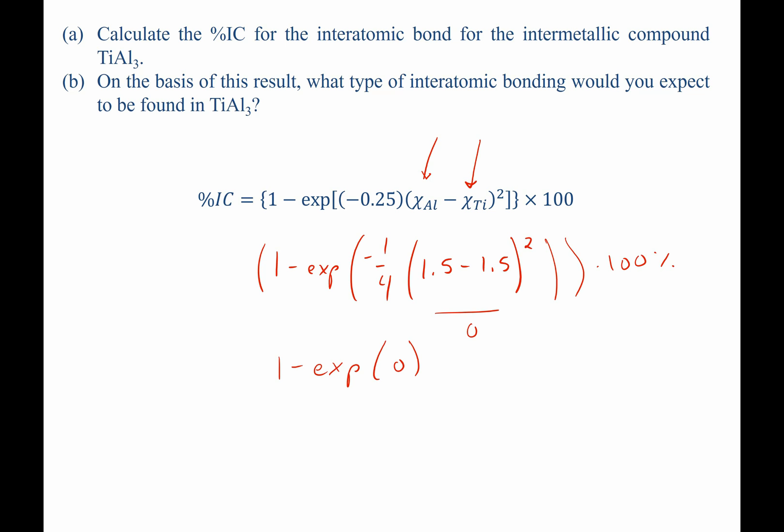And 1 minus the exponential of 0 is just 1 minus 1. So we have 1 minus 1, which is 0, times 100%.